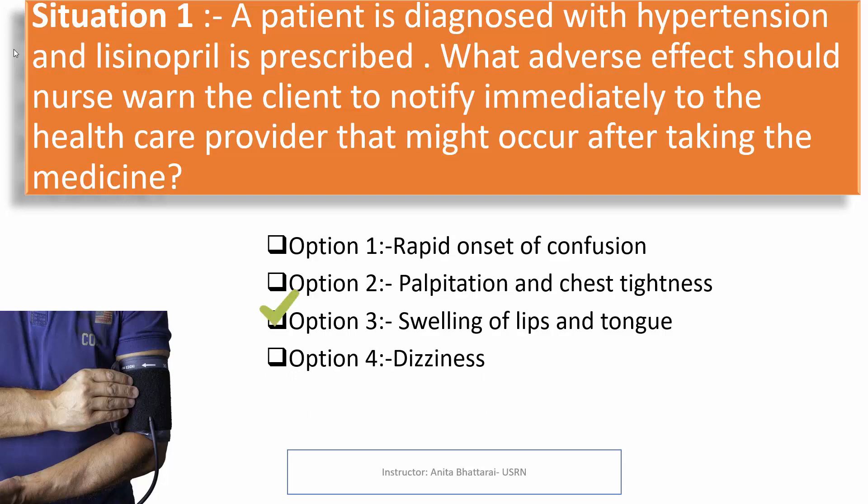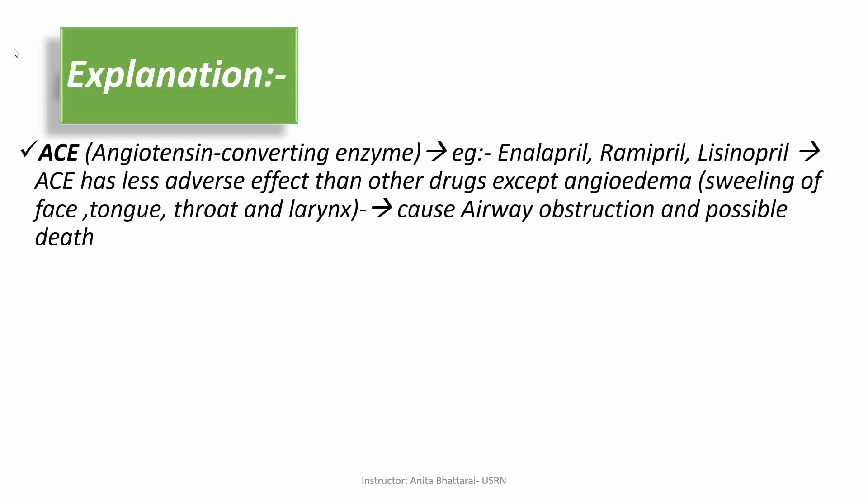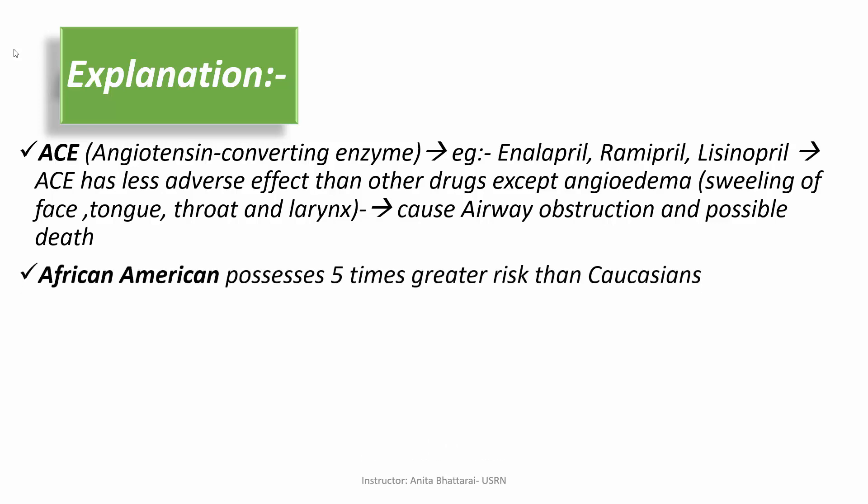The correct answer is swelling of lips and tongue. Lisinopril, enalapril, and ramipril are ACE inhibitors — angiotensin converting enzyme inhibitors. These drugs have several adverse effects. The minor adverse effects include cough and dizziness. However, the major adverse effect is angioedema — that is, swelling in the face, tongue, throat, and larynx. If there is swelling, it can cause airway obstruction, which may be of a fatal nature.